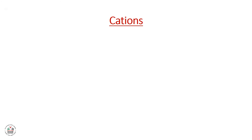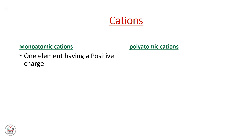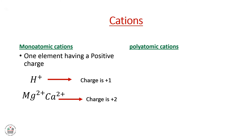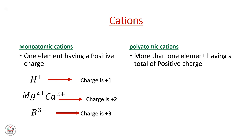Now we will move to the cations. We also have two different types: monoatomic cations and polyatomic cations. In monoatomic cations, one element has a positive charge. For example, H⁺ has a charge of plus one; Mg²⁺ and Ca²⁺ have a charge of plus two; and Al³⁺ has a charge of plus three. For polyatomic cations, more than one element has a total positive charge — for example, NH4⁺ has a charge of plus one.